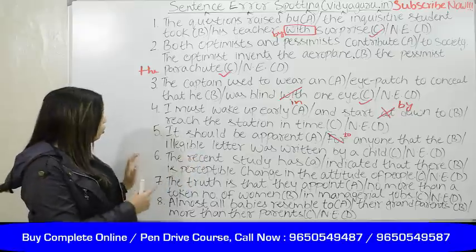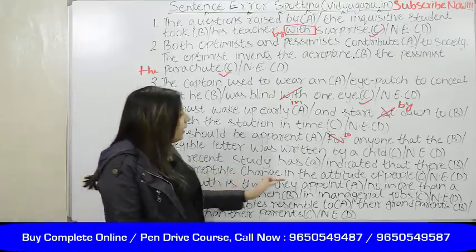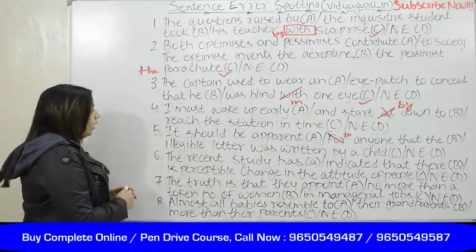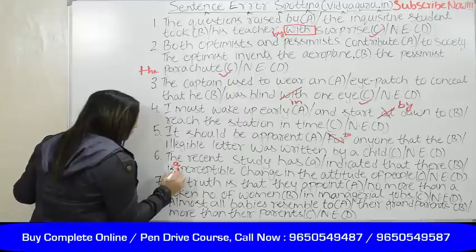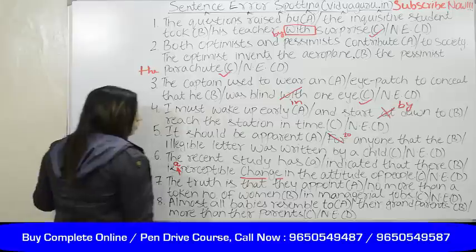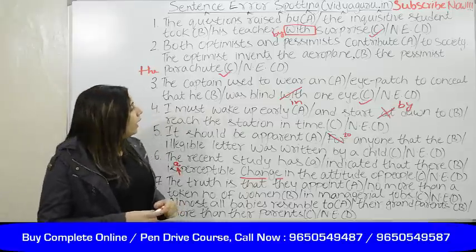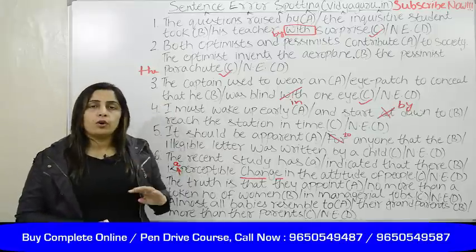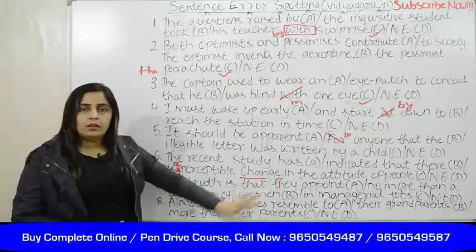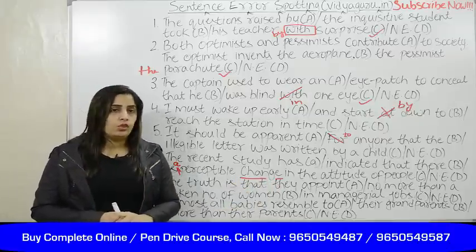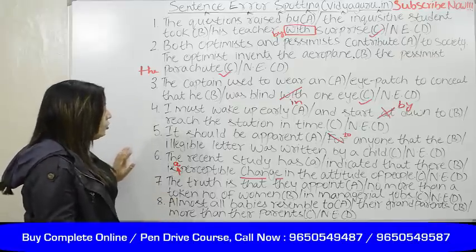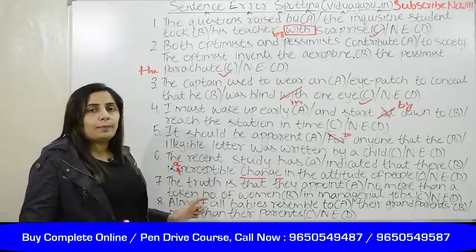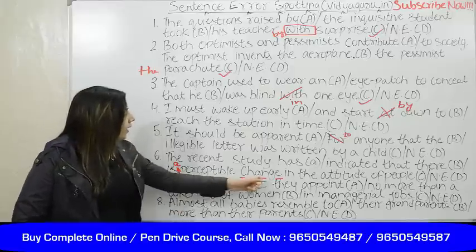The sixth question: 'The recent study has indicated that there is perceptible change in the attitude of people.' This is the easiest question. 'Change' is a singular countable noun — just like 'parachute' was. We are expected to use an article before it. So 'perceptible change' should be replaced with 'a perceptible change.' The sentence should read: 'there is a perceptible change' — 'a' must be placed before it as 'change' is a singular countable noun.